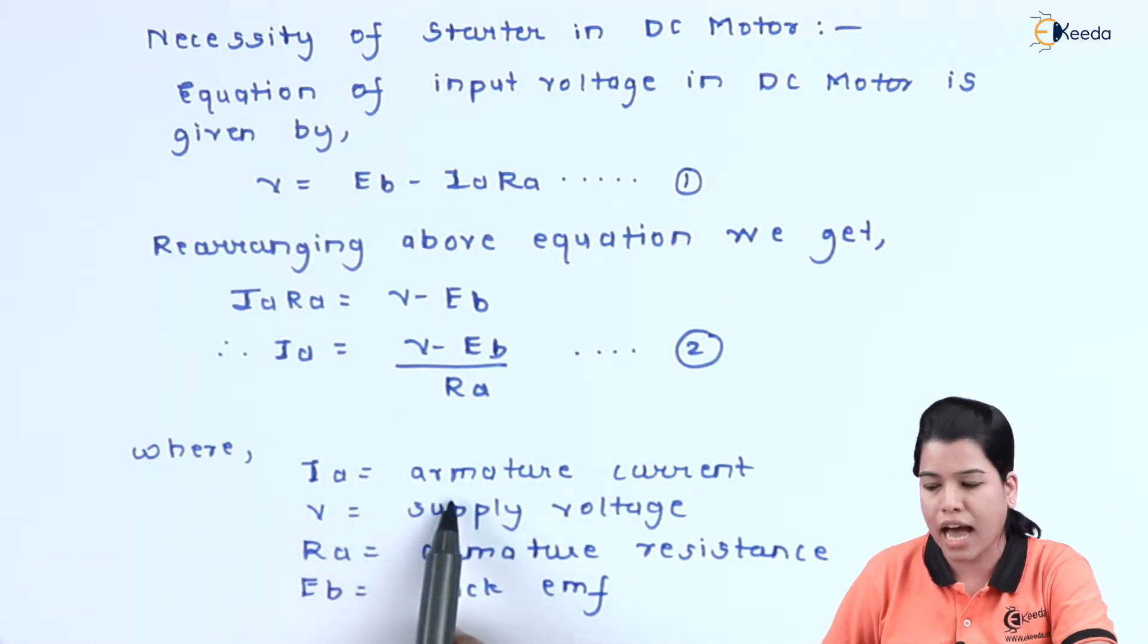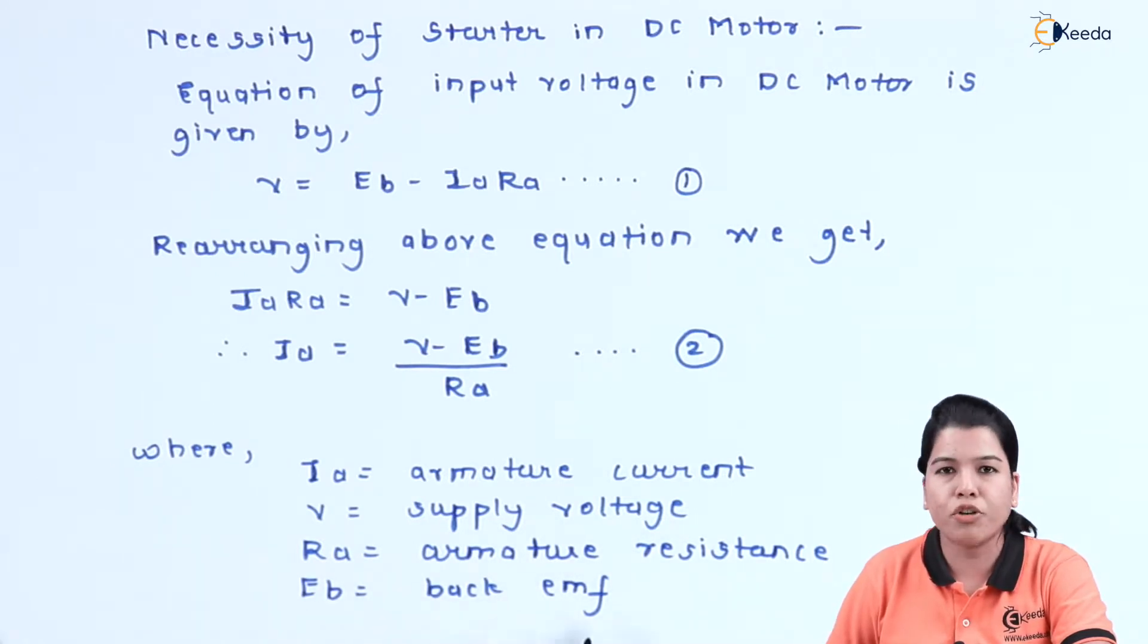Here, Ia is the armature current, V is the supply voltage, Ra is equal to armature resistance, and Eb is equal to back EMF.